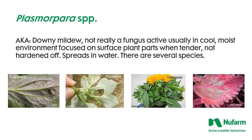Downy mildews are not true fungi; they're active in cool, moist environments and focused on tender, unhardened plant parts. This makes the transition phase from propagation to growing-on particularly vulnerable. Water is required for spread, and there are several species of downy mildew. It shows up on the bottom of leaf surfaces first — as seen on rudbeckia and impatiens — and then works through the upper surface, as visible on coreopsis and coleus.